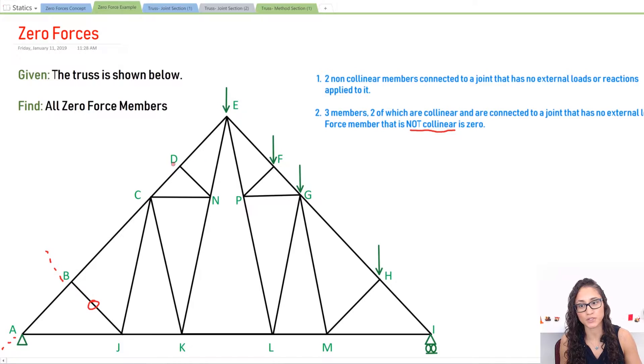Now the same thing we can apply to D. At D again I have three members. DC and DE are collinear—they're on the same line of action. So DN is not collinear, so it's going to be zero. Now let's look at J. I have JA, JK—same thing, three members because this member is zero. So I only have three members left. Now JA and JK are collinear. I have no external force or load, so JC is going to be zero.